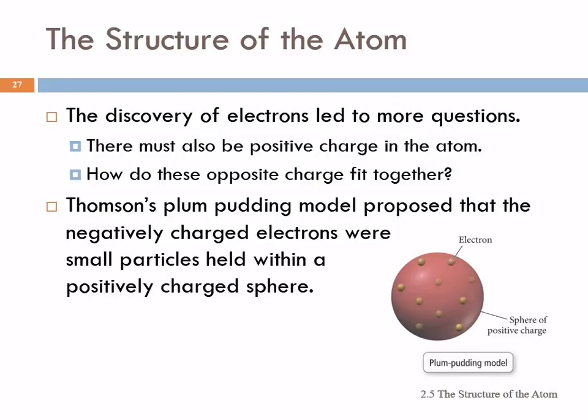Structure of the atom. We talked about how electrons were discovered, and this was a big discovery because now they realized there were particles inside these atoms that we thought were indestructible. So this led to more questions - what else might be inside the atom? They knew that atoms themselves were electrically neutral. So if they've got these negatively charged pieces inside them, there has to be something positive to offset the charge.